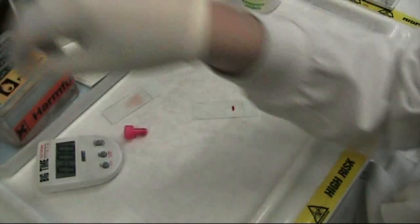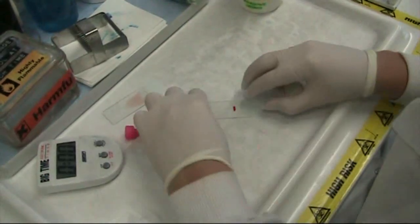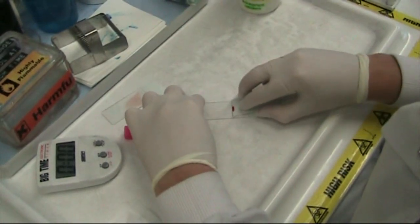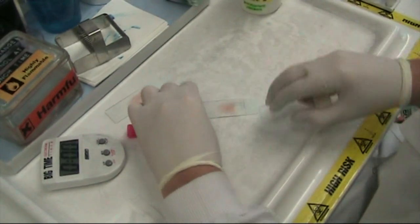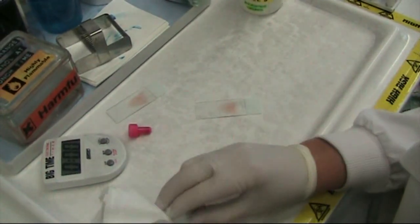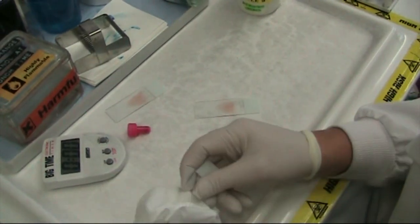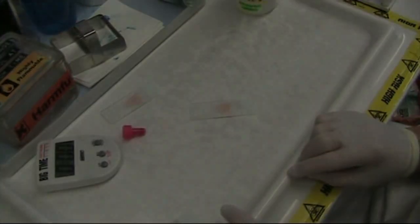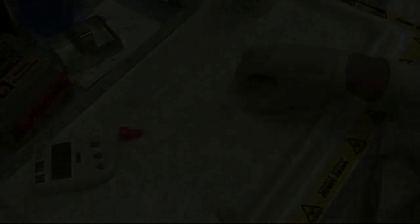Were you not doing a Giemsa stain for blood films? We don't — this is a modified Wright stain, which is a part of Giemsa. This is the stain that we use; it's called a modified Wright stain. The Giemsa stain we normally use for bone marrows, but this modified version is a part of Giemsa anyway.